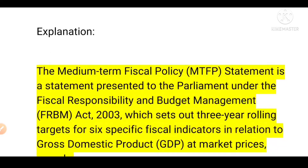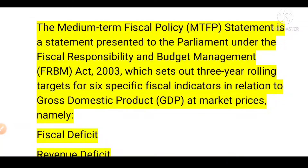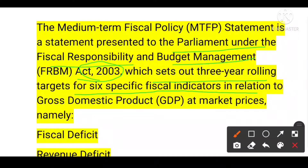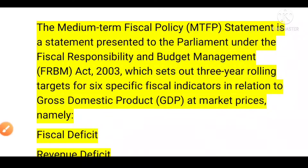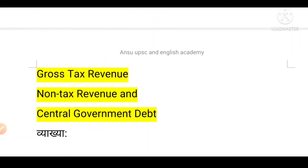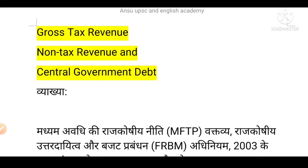The solution to this is D. The Medium Term Fiscal Policy Statement is a statement presented to parliament under the Fiscal Responsibility and Budget Management Act 2003, which sets out three-year rolling targets for six fiscal indicators in relation to GDP at market price — namely fiscal deficit, revenue deficit, primary deficit, gross tax revenue, non-tax revenue, and central government debt.